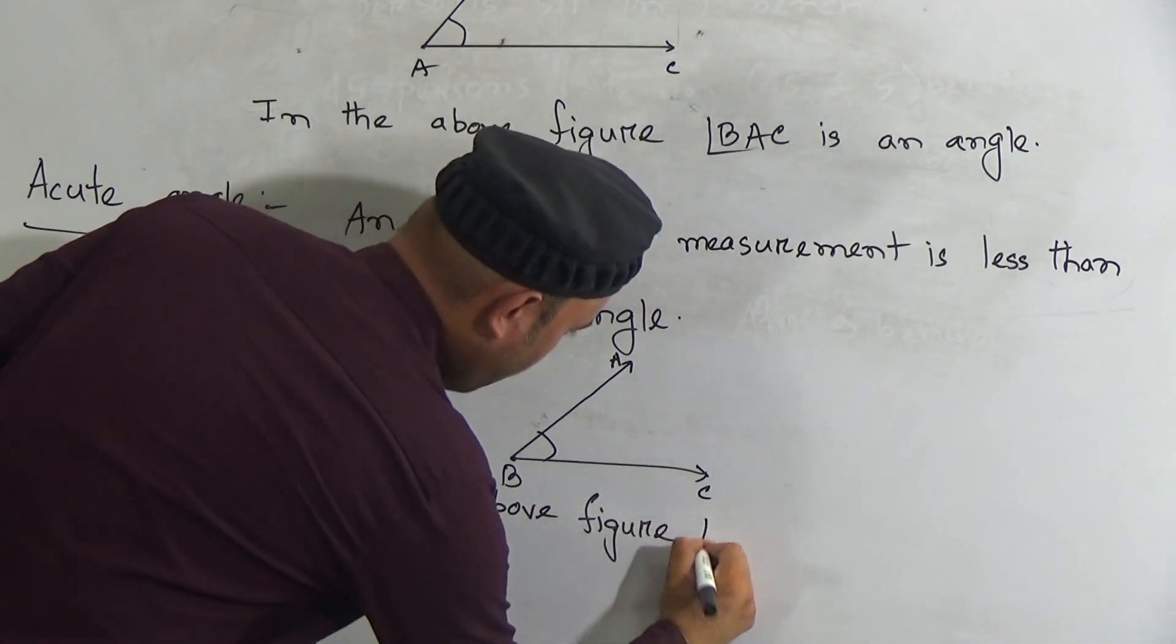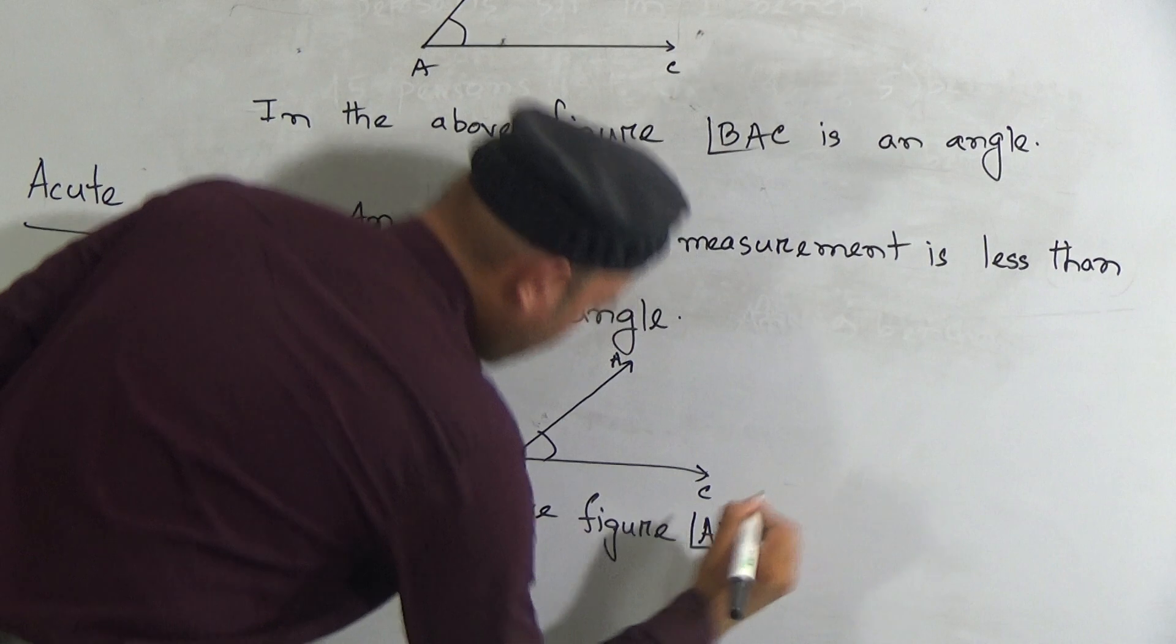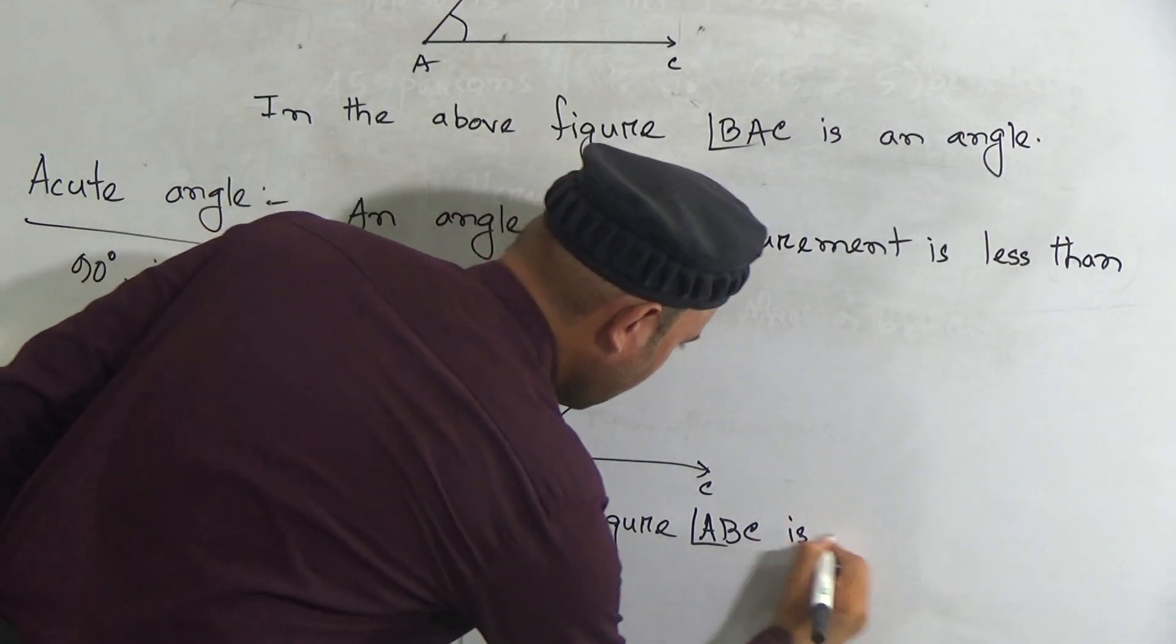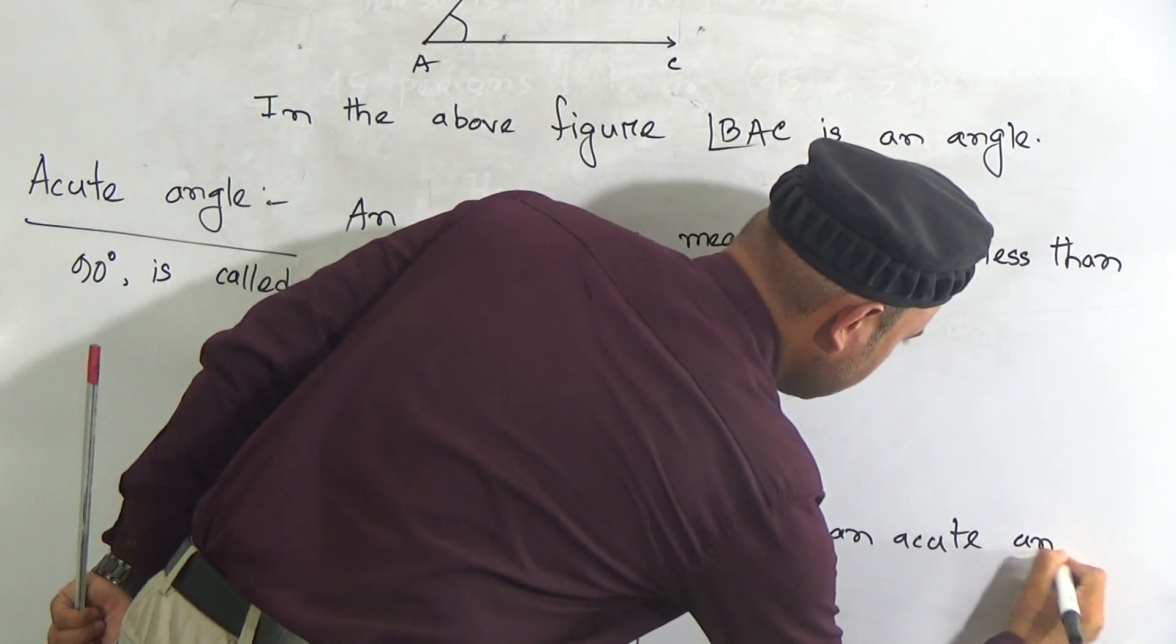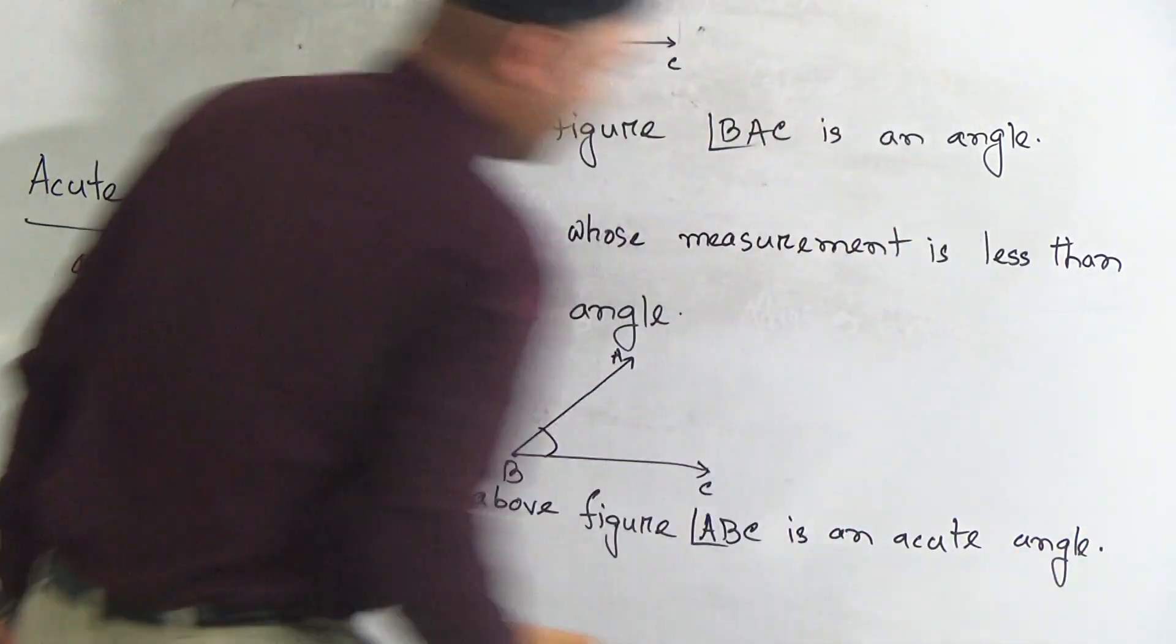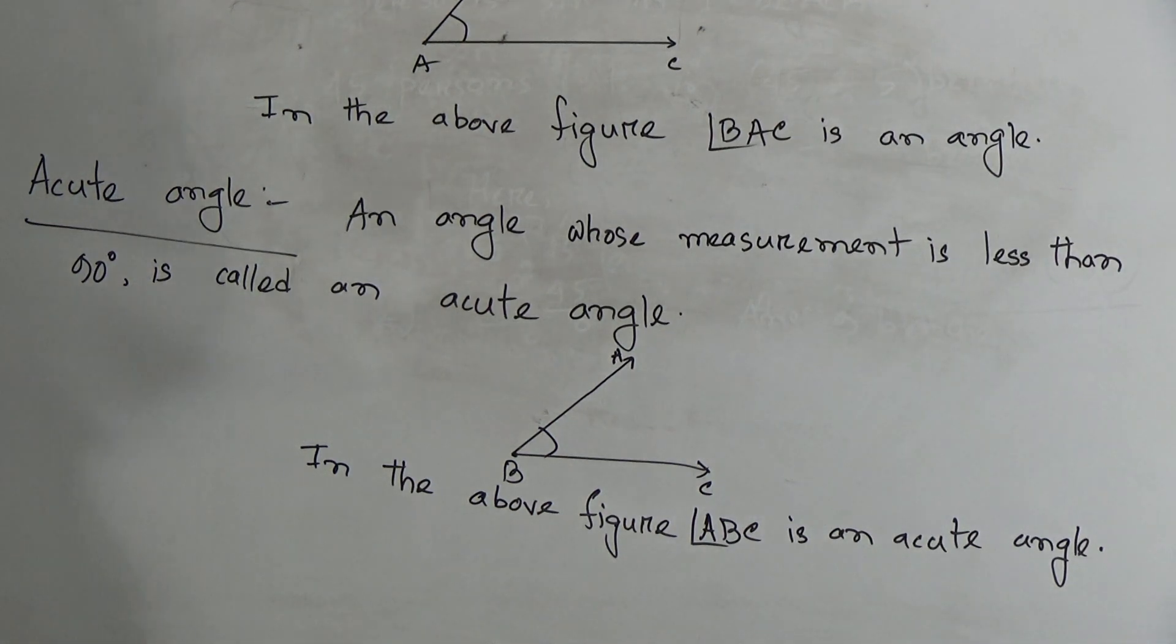ABC is an acute angle. So you have to write: in the above figure, ABC is an acute angle.